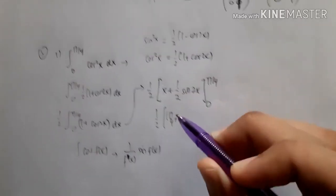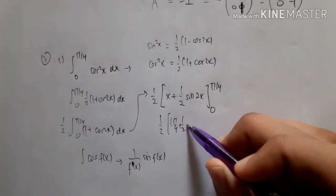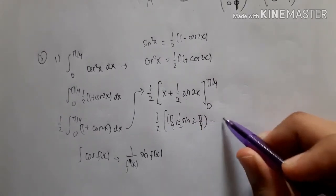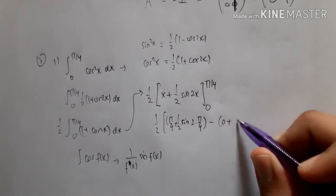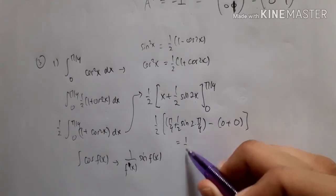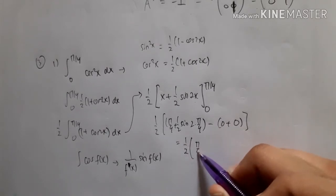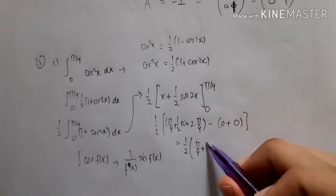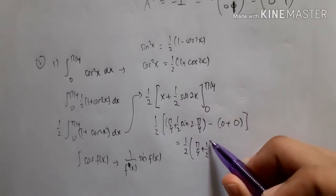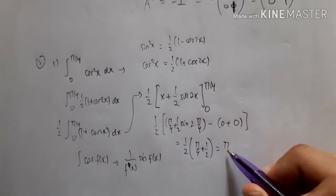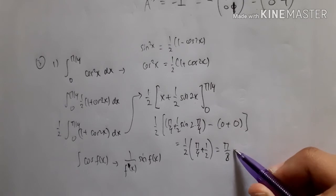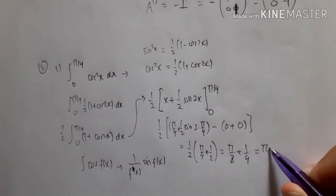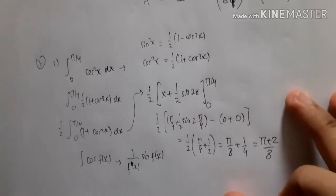Now we substitute the limits one by one. At x = π/4: π/4 + (1/2)sin(2·π/4). At x = 0: 0 + 0. This gives (1/2)[π/4 + (1/2)sin(π/2)] = π/8 + 1/4. The final answer for number one is (π + 2)/8.